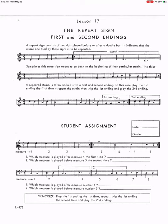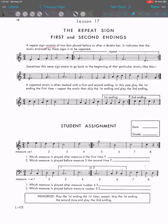A repeat sign consists of two dots here, placed before or after a double bar. It indicates that the music enclosed by these signs is to be repeated. So when you have the first line, the order of playing should be, if I number the measures like this...